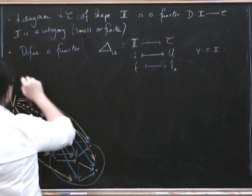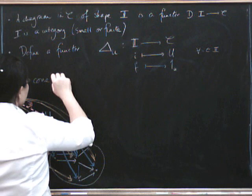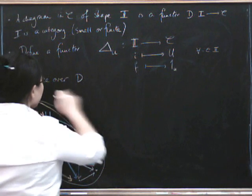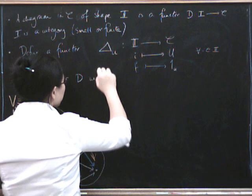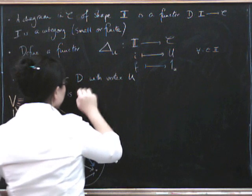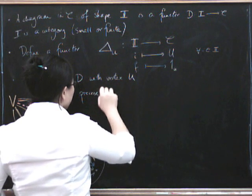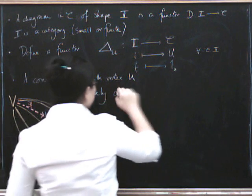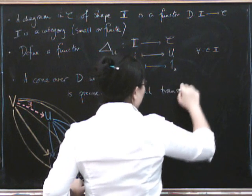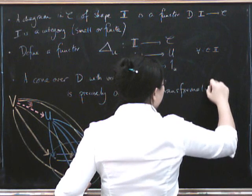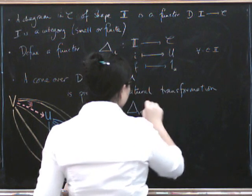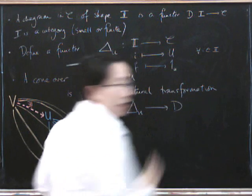And then a cone U over this diagram with vertex U is precisely a natural transformation from this constant functor delta at U to our diagram D.